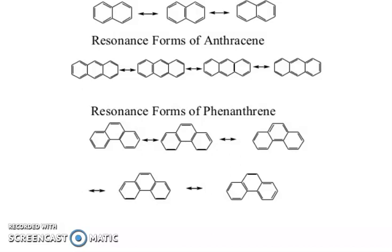Similarly for anthracene, you can see the arrangements: benzene, quinoid, quinoid, benzene, benzene, and so on. For the resonance forms of phenanthrene, the first is benzene, second is benzene, third is benzene, then benzene, quinoid, benzene, quinoid — followed by all-benzene arrangements and quinoid combinations.